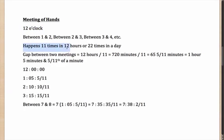It essentially happens 11 times in 12 hours, or 22 times in a day. You might ask: why not 12 times in 12 hours? Because between 1 and 2 there is a meeting, between 2 and 3 there is a meeting, between 3 and 4 there is a meeting — but the meeting between 11 and 12 and between 12 and 1 is the same meeting that happens at 12 o'clock. So this one meeting takes care of two hour gaps. That is why it is 11 meetings in 12 hours.